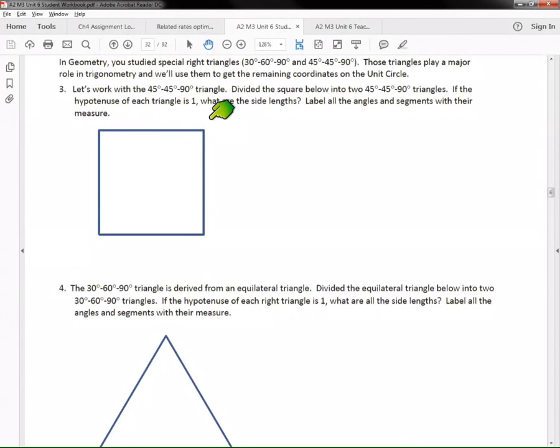The directions here tell us to split this square into two equal triangles, so I'm going to draw a diagonal like so, and draw a little right angle right there. I'll draw a right angle right there as well. There we've got our two triangles.